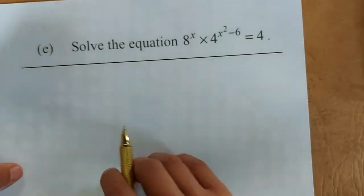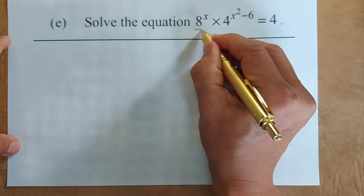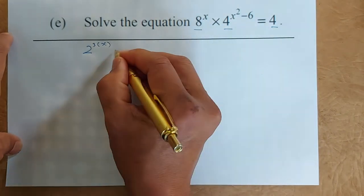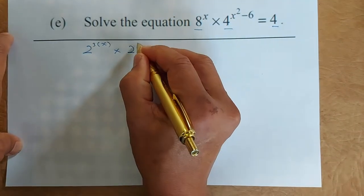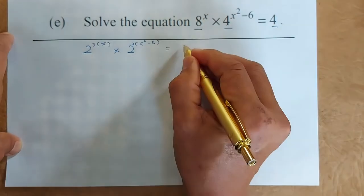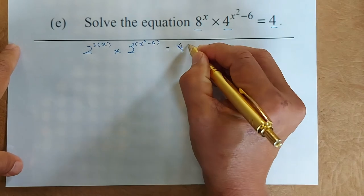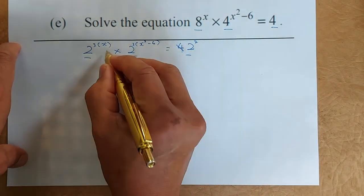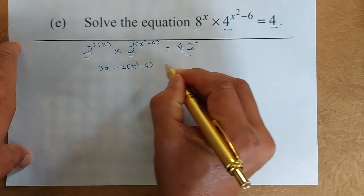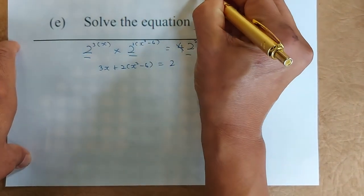The last question is a bit closer to Level 2, but if you can do this you'll be fine. We need to make all the bases the same. 8 to the power x is the same as 2 cubed to the power x, because 2 cubed is 8. And multiplied by 4 is 2 squared, so it becomes 2 squared to the power (x squared minus 6), and that equals 4, which is 2 squared. Since the bases are the same, you can add the powers: 3x plus 2(x squared minus 6) equals 2.